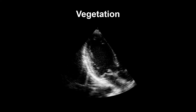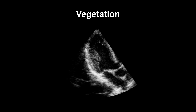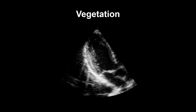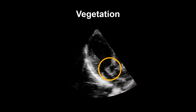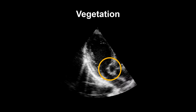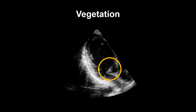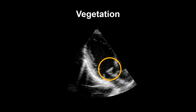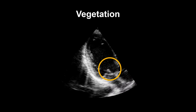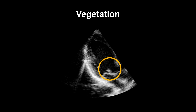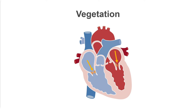A vegetation appears on echocardiography as an oscillating intracardiac mass on a valve or its supporting structures, in the path of regurgitant jets or on implanted material. Typically, valvular vegetations are found on the atrial side of the mitral or tricuspid valves, or the ventricular side of the aortic or pulmonary valves, though this is not an absolute rule.